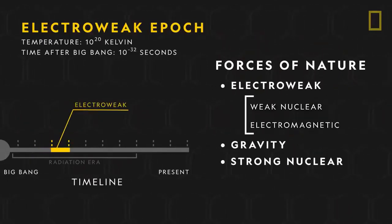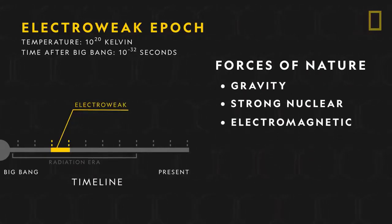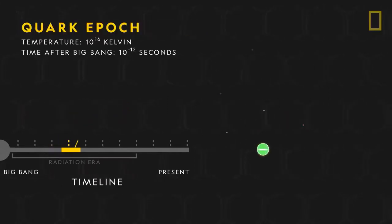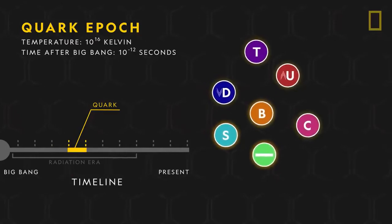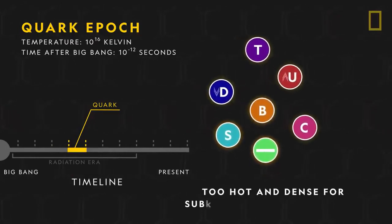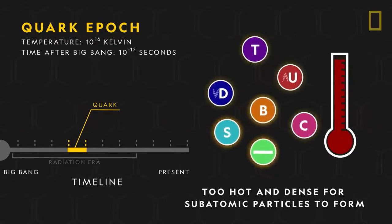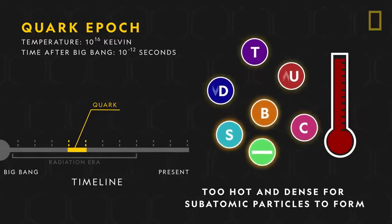Then came the electro-weak epoch, when the last two forces, electromagnetic and weak, finally split off. During the next stage, the quark epoch, all of the universe's ingredients were present. However, the universe was still too hot and dense for subatomic particles to form.